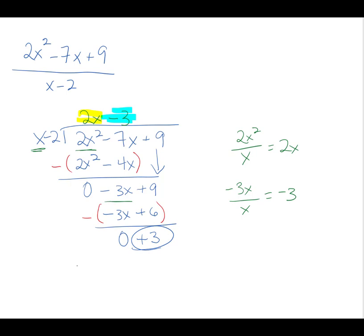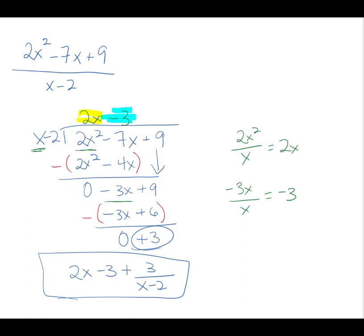So here is our answer: 2x - 3 plus 3 over (x - 2). That's our fractional remainder part. As you see, because we had a remainder, x - 2 did not divide evenly into 2x² - 7x + 9.